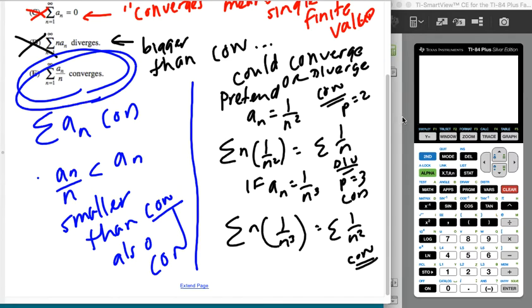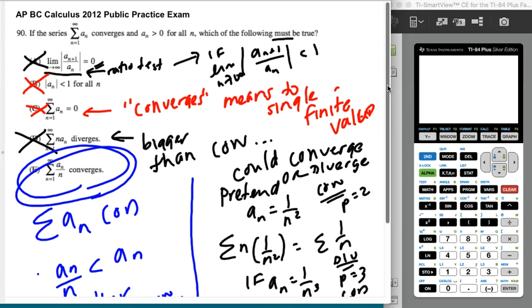So it has to be e. Again, it's a little bit hard to get there sometimes. Sometimes like with this, when you get it narrowed down to d and e, it is a little bit easier to maybe make a counterexample of, hey, what if my a sub n were this series that I've memorized that converges. But that's kind of the idea. So that's 90 and your answer is e.